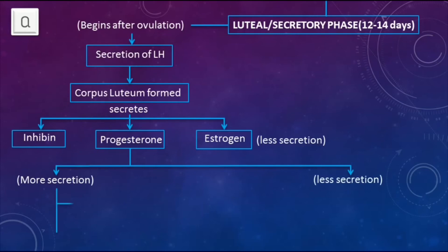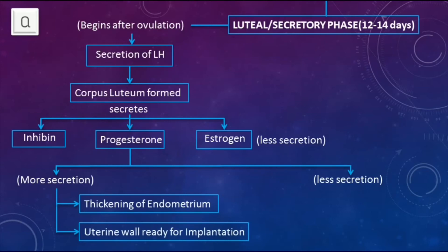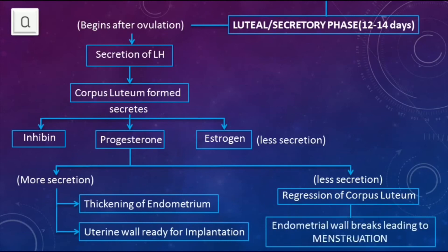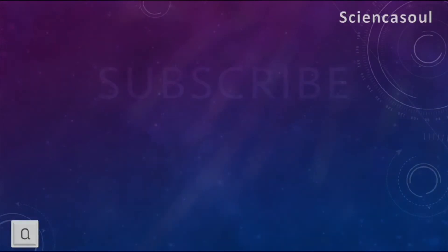Progesterone has two aspects: more secretion and less secretion. More secretion of progesterone helps in thickening of the endometrium and prepares the uterus for implantation. Less secretion leads to regression of the corpus luteum, which results in the endometrial lining breaking down, leading to menstruation. These are the phases of the menstrual cycle.